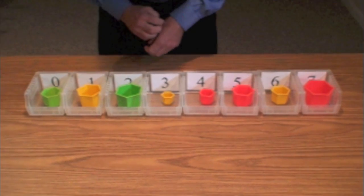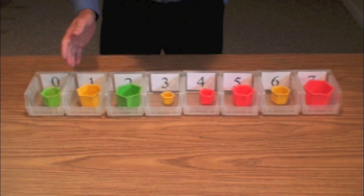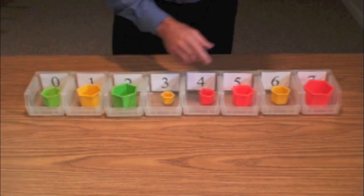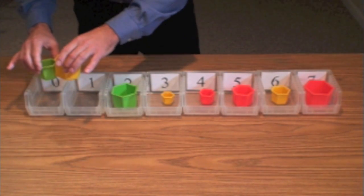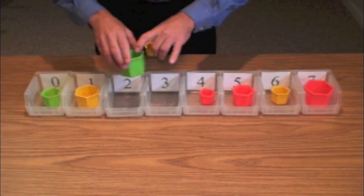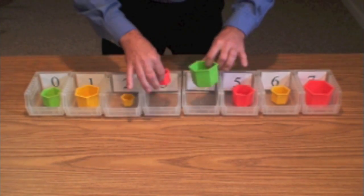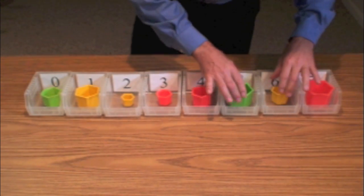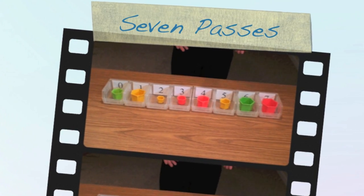On pass number two, we'll get the next largest item placed in location six of the array — it looks like it's this green cup. Let's go ahead and take a look. Compare, in order. Compare, in order. Compare, out of order — exchange. Compare, out of order — exchange. Compare, out of order — exchange. You can see the green cup is making its way down to the end. Compare, out of order — exchange. So we've made two passes.